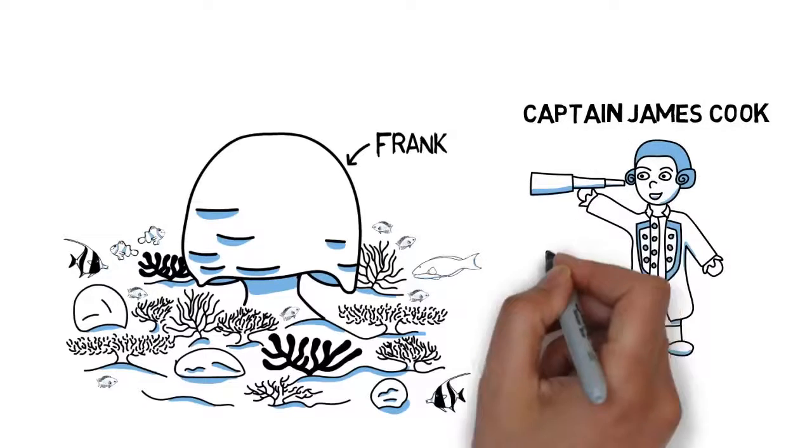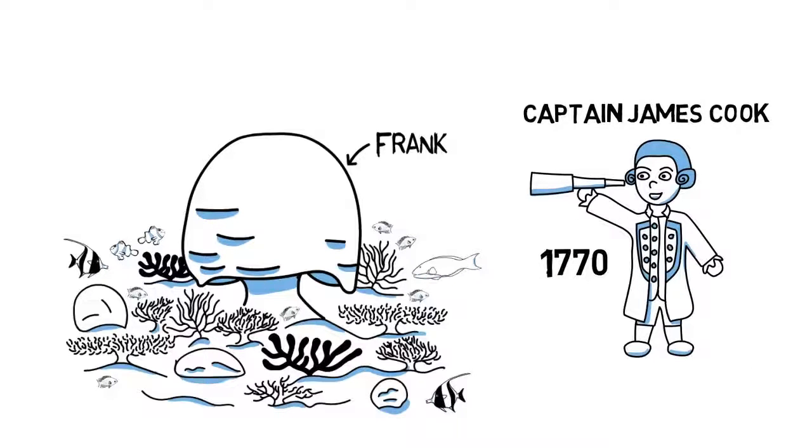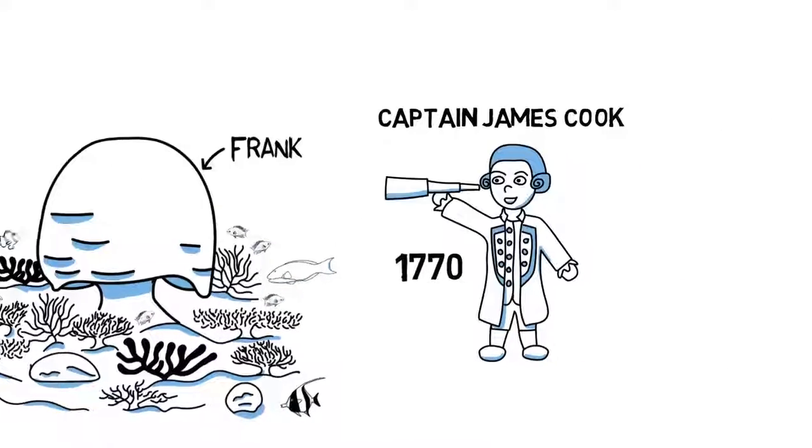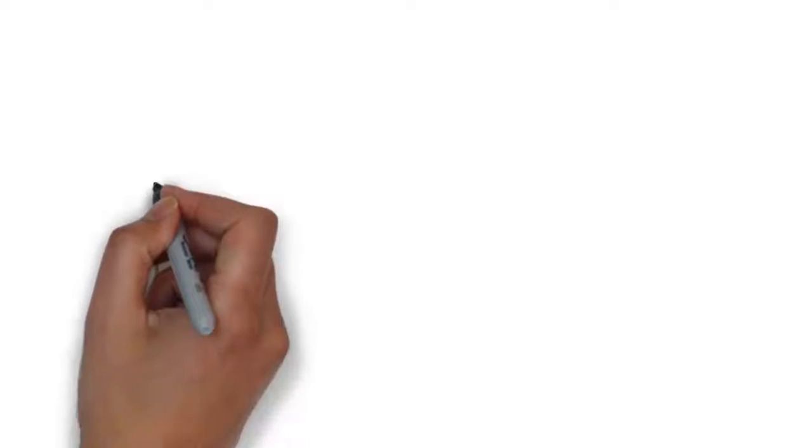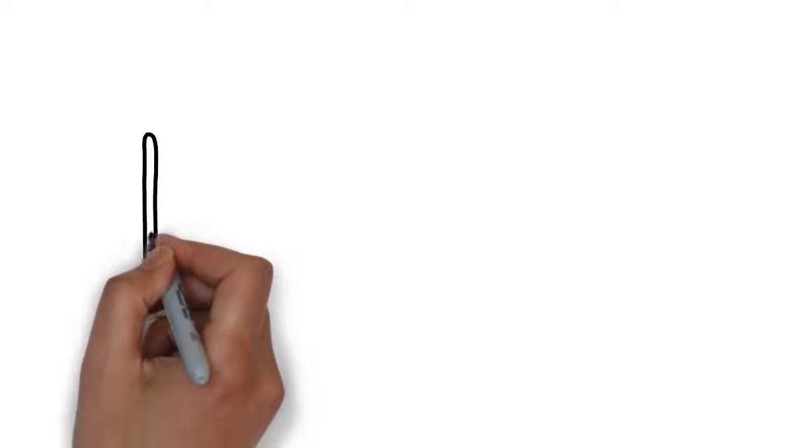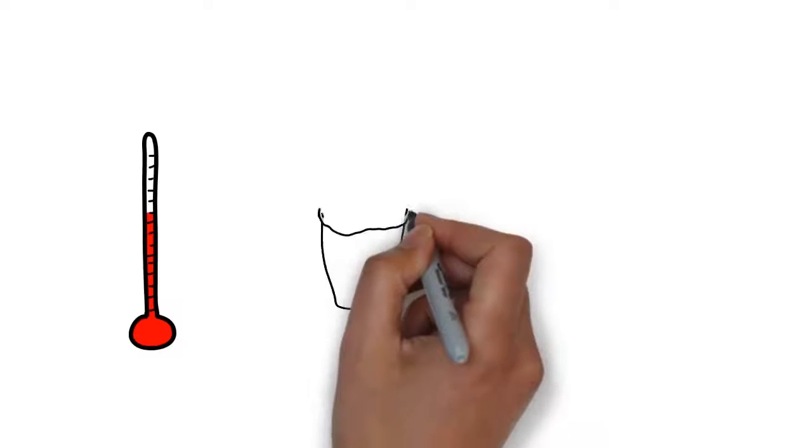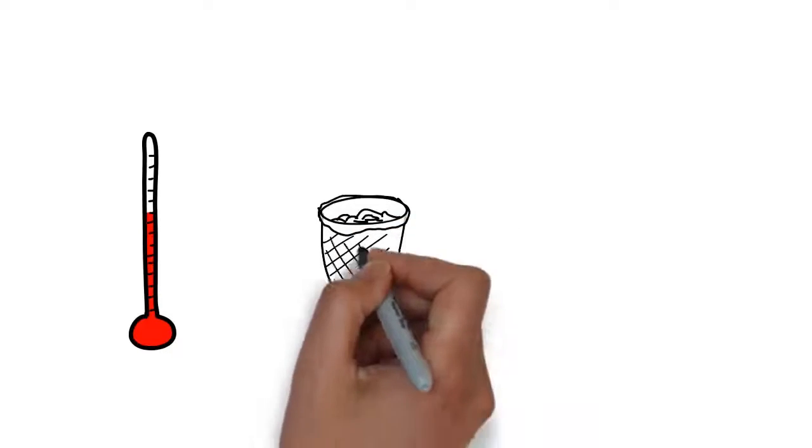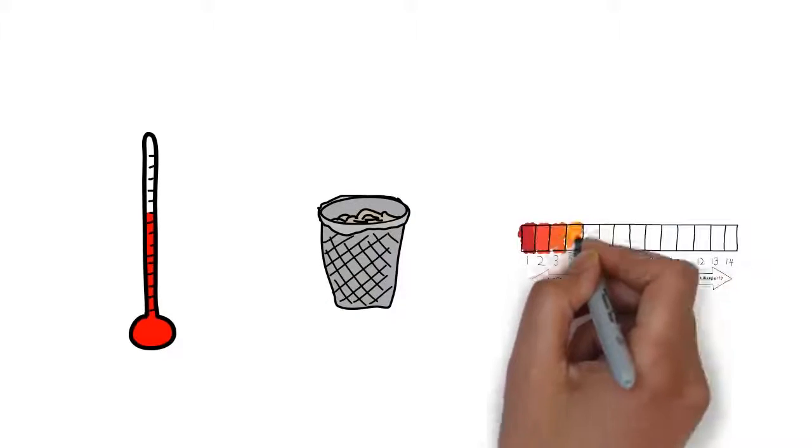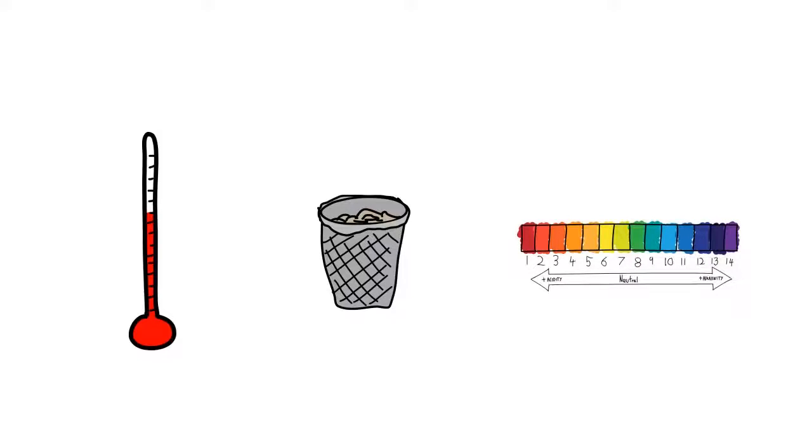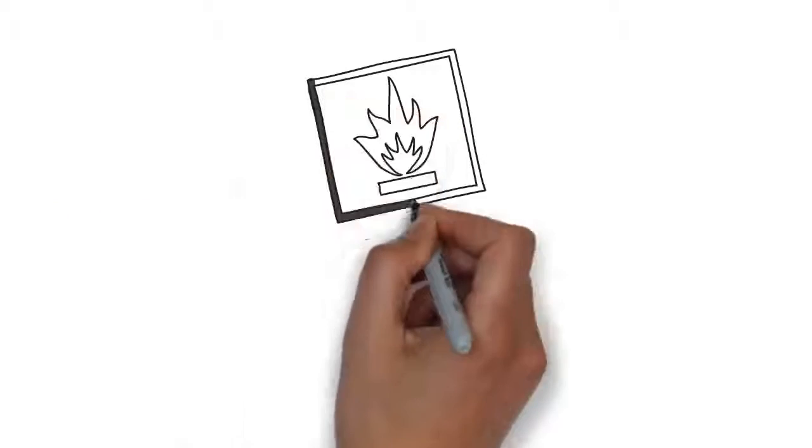In his 400 years of life, Frank saw the ocean change quite a bit and not in a good way. Especially in this last century, Frank noticed the ocean getting gradually warmer, dirtier and more acidic. But Frank is big and tough. He dealt with it without major problems.